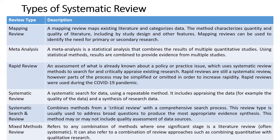Rapid reviews are still a type of systematic review. However, part of the process may be simplified or omitted in order to increase rapidity. When we come to the term systematic review itself, it involves a systematic search for data using a repeatable method and includes appraising the data — for example, the quality of the data — and a synthesis of research data. Systematic search and review is entirely different; it combines methods from a critical review with a comprehensive search process, and this review type is usually used to address broad questions to produce the most appropriate evidence synthesis. This method may or may not include quality assessment of data sources.